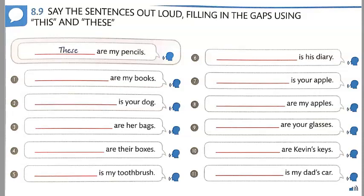Number six: This is his diary. Number seven: This is your apple. Number eight: These are my apples. Number nine: These are your glasses. Number ten: These are Kevin's keys. And number eleven: This is my dad's car.